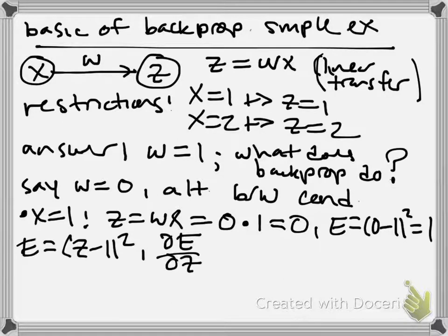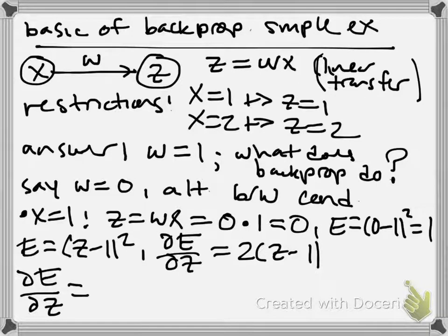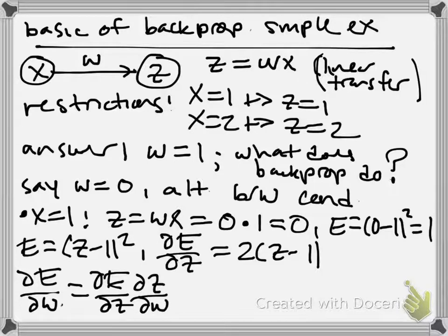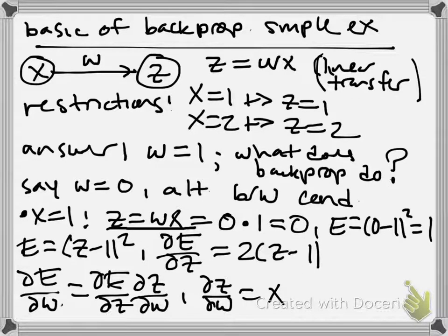So then, dE dz is going to be equal to 2z minus 1. But we don't just want dE dz, what do we want? We want dE dw. Well, what does the chain rule tell us about dE dw? It says that we can get that by computing dE dz times dZ dw. Simple as that in this case. What is dZ dw? Well, look up here for what z is. Z is wx. So dZ dw is x. So that means, we'll go on to the next page, that dE dw is equal to 2z minus 1 times x.